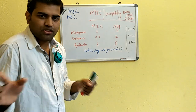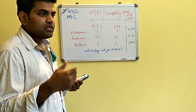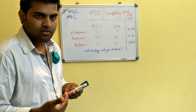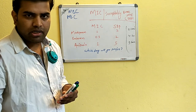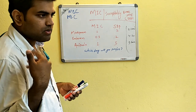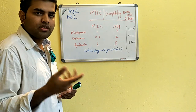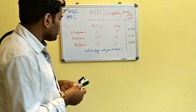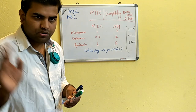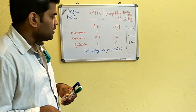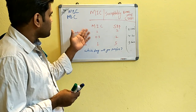Now, understanding susceptibility breakpoints, you can determine resistant or sensitive. But when it comes to choosing among multiple sensitive drugs — for example, suppose you've grown a blood culture or sputum culture and found Pseudomonas — you perform susceptibility testing.